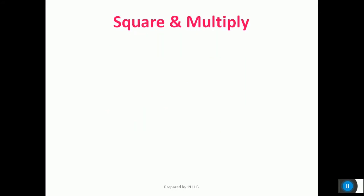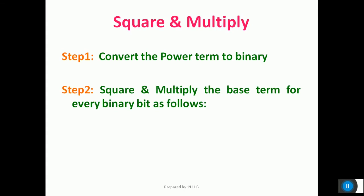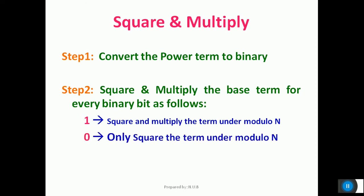So what is the solution for this? The solution is square and multiply, which is the easiest method. Step 1: convert the power term to binary. Step 2: square and multiply the base term for every binary bit obtained from the previous step. For every 1 you encounter, square and multiply the term under modulo n. For every 0 you encounter, only square the term under modulo n.